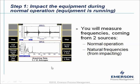What you see here is a screenshot of data collection during step one. You are impacting the machine when the machine is rotating, so certain peaks are coming from operation and certain peaks are coming from impacting. The question is which one is which — we will find out soon. Normally the data collector suggests you do 12 averages, and after 12 averages you will be guided to the next step.